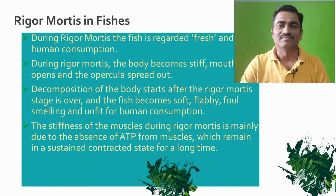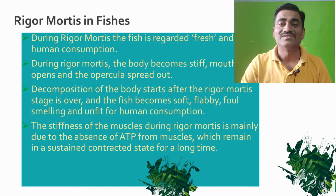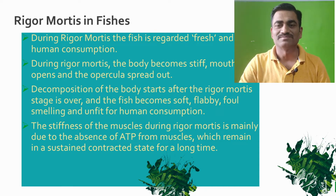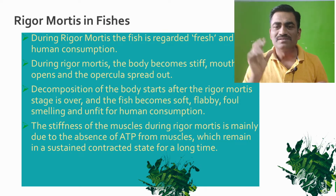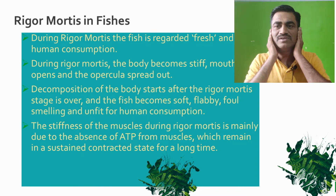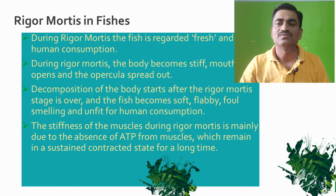The nutrient content — protein, fat, carbohydrates, vitamins, and minerals — are in good condition during rigor mortis, so the fish is fit for human consumption. During rigor mortis, the body becomes stiff, the mouth opens, and the operculum spreads out. The fish muscles become tight, the mouth slightly opens, the body becomes rigid, and the operculum protrudes from the body. This condition of rigor mortis mostly starts after 5-7 hours and lasts for few hours to few days.